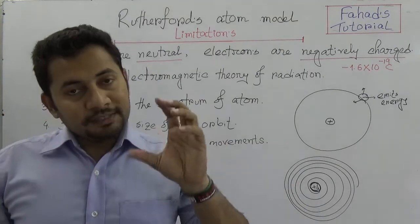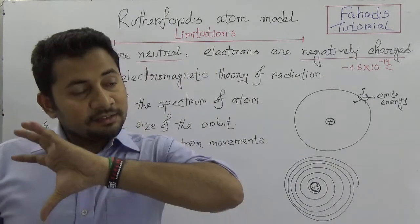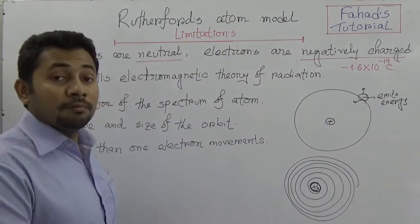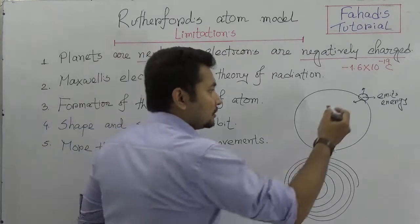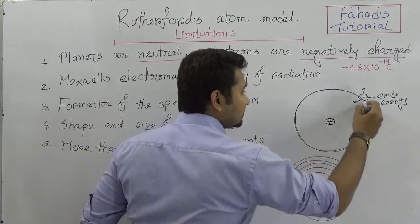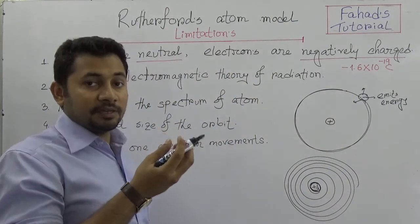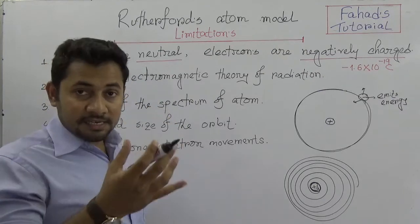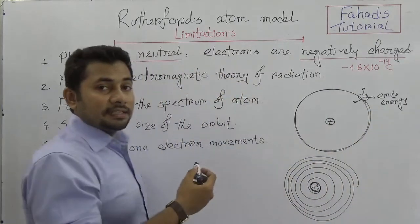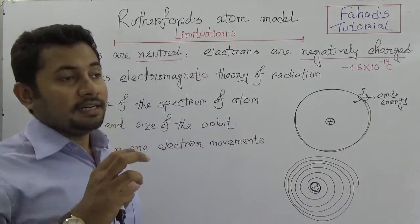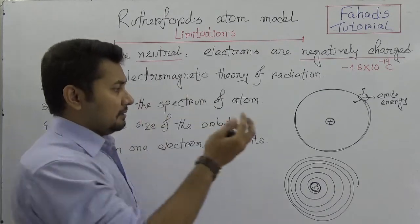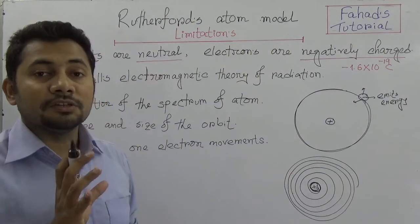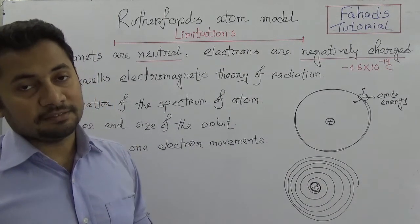The fourth limitation is that Rutherford did not give any idea about the size and shape of the orbit. The concept of the orbit also comes from the Niels Bohr model. When Rutherford described the circular pathway, there was no clear idea of what that orbit actually looks like — whether it is circular, triangular, or any other shape. The size and shape were not clarified in Rutherford's atomic model.